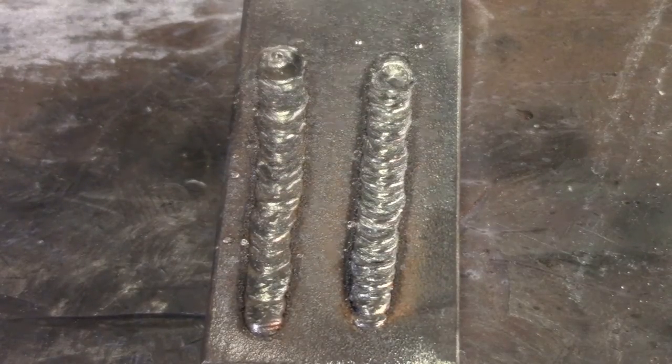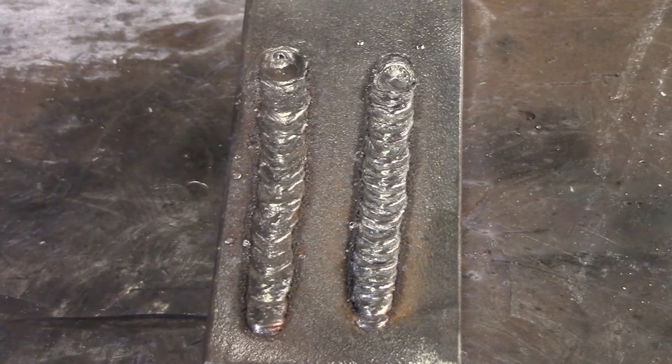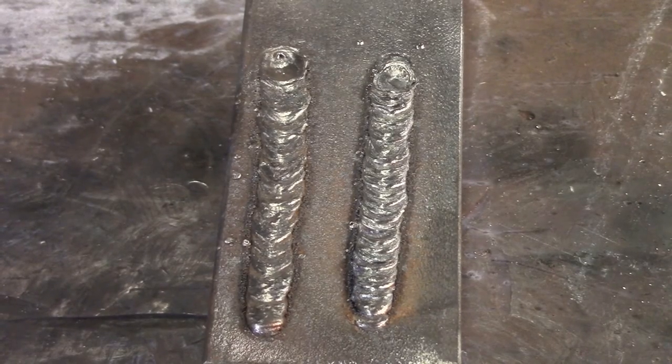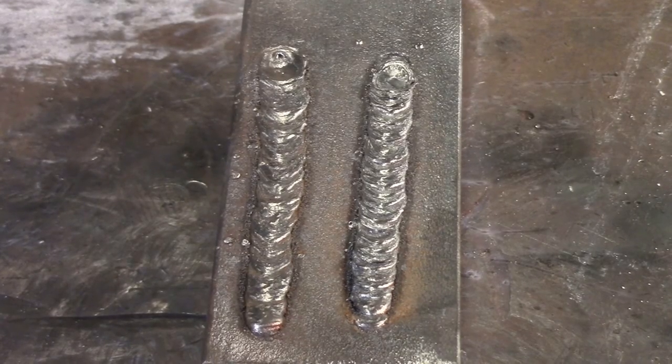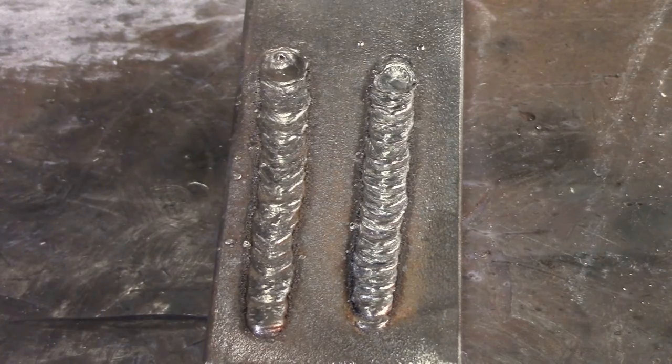These are our two 6010 passes, one on the left was no whip, one on the right is with a whip. The reason you do that whipping motion is because you want to get out of the puddle, allow it to solidify. A lot of times they do that if you're blowing a hole in a root. Get out, let it solidify, then go back and add and keep going.